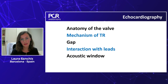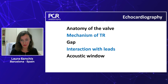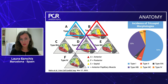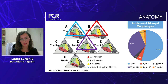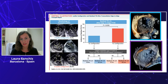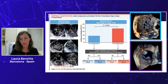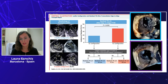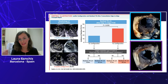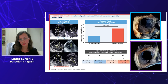With echocardiography, we can identify the mechanisms of TR: what is the gap, if we have leads, the interaction with leads, and evaluate the acoustic window if we want to repair the valve. There is a new classification for tricuspid valve morphology — only half of valves are truly tricuspid. It's important to identify the morphology because it has therapeutic implications. Studies suggest that valves that are not tricuspid, especially quadricuspid or those with an indented septal leaflet, have worse outcomes with edge-to-edge therapy.